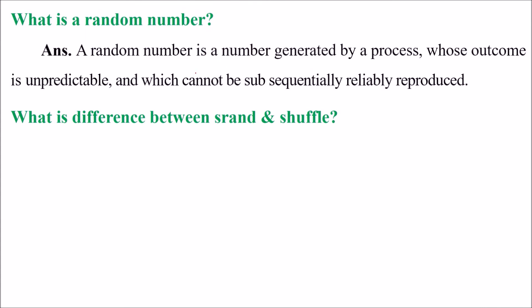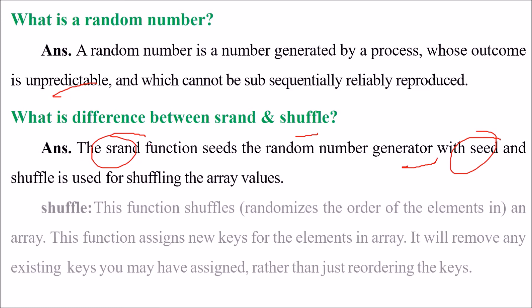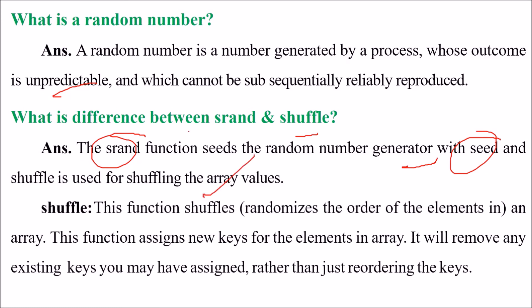What is a random number? A random number is a number generated by a process whose outcome you cannot predict — it is unpredictable and cannot be subsequently reliably reproduced. What is the difference between srand and shuffle? The srand function seeds the random number generator with a seed, while shuffle is used to shuffle or randomize the array values — it randomizes the order of elements in an array and assigns new keys, removing any existing keys.